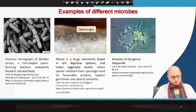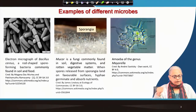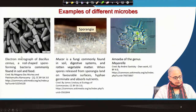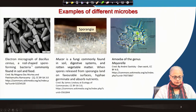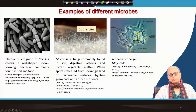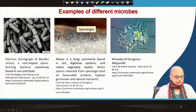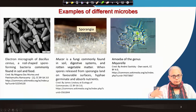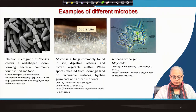Here I have some examples, mostly graphics. In the first case we have an electron micrograph of Bacillus cereus. These are rod-shaped, spore-forming bacteria. They are very common in soil and food, and we will go into some details about these kinds of bacteria in subsequent topics.